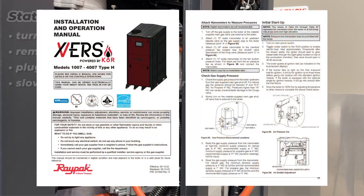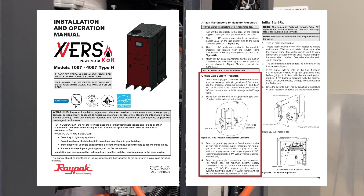Refer to the INO manual of the unit you are working on for exact gas pressure numbers. If the pressure you are reading is above or below what is stated in the manual, you will need to make adjustments to the regulator or, in some cases, add a regulator that is dedicated to the boiler.